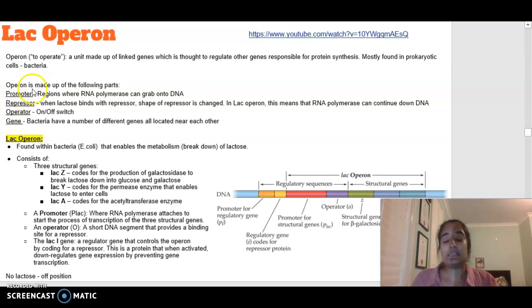A promoter is the region where RNA polymerase is going to grab on to the DNA and begin transcription. A repressor, in terms of the lac operon, is when lactose is binding to the repressor and the shape of the repressor is going to be changed. The thing that we're breaking down, which in the lac operon is lactose, is going to bind with the repressor. The shape of the repressor is changed, which means in the lac operon, the RNA polymerase can now continue down the DNA and continue transcription.